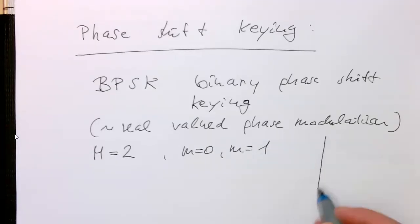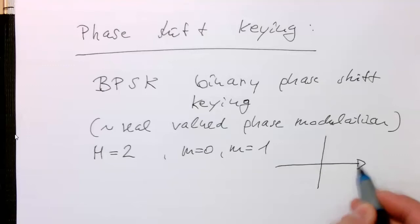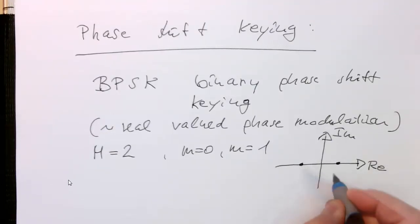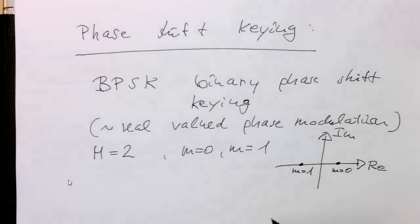And on the imaginary and real axis here, then this would be just sitting here or there. So this would be our M equals 0 and this would be our M equals 1.